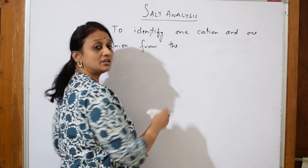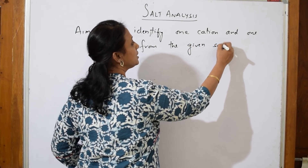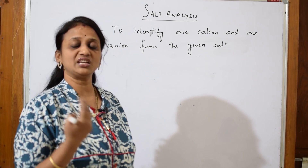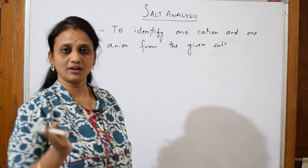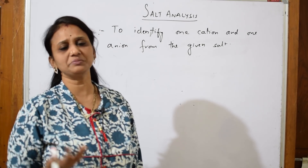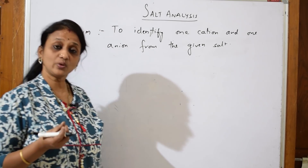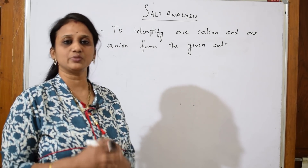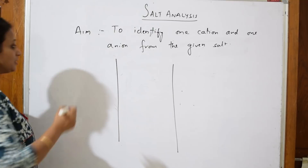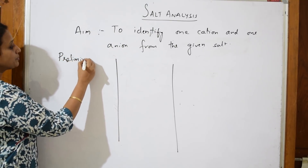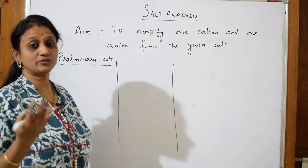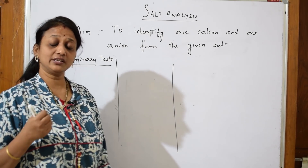Every student will be given different salts. After writing the aim — which is to identify one cation and one anion from the given salt — you take the practical analysis sheet and fill the first page with your name, registration number, and other details. Once you turn the page, try to pick up the salt analysis and do it first, because salt analysis is very easy to identify. Once you identify it, volumetric and content-based will not take much time.